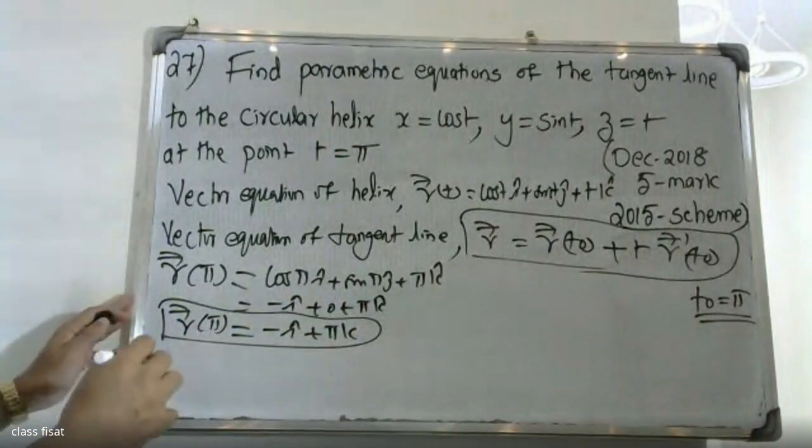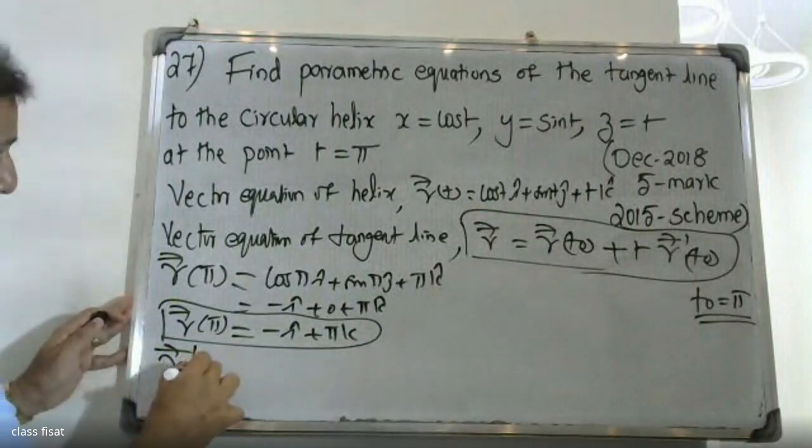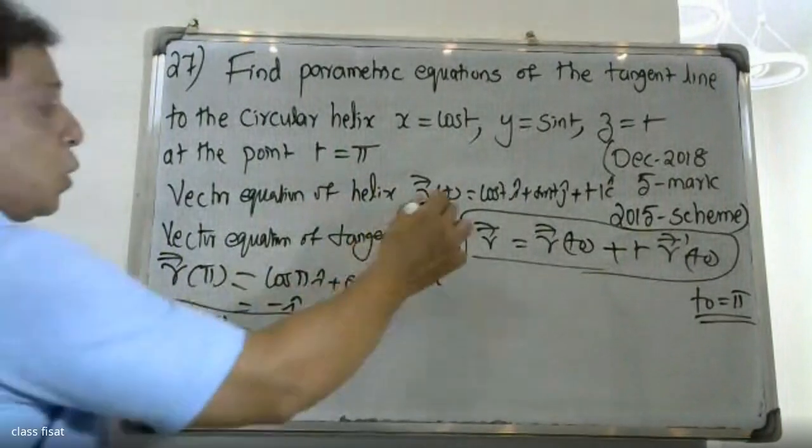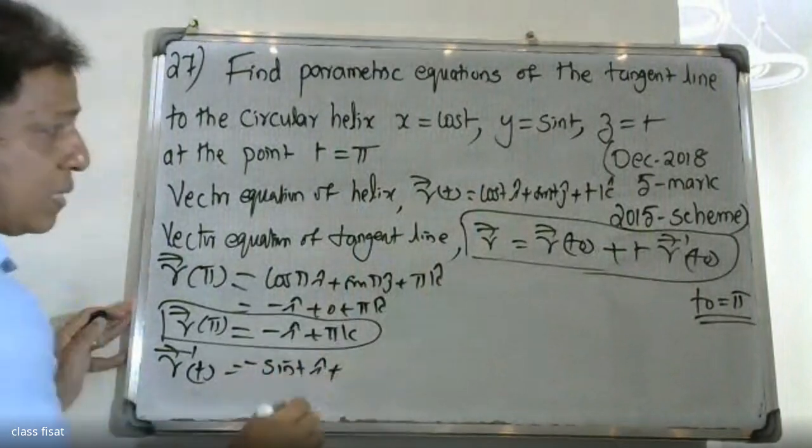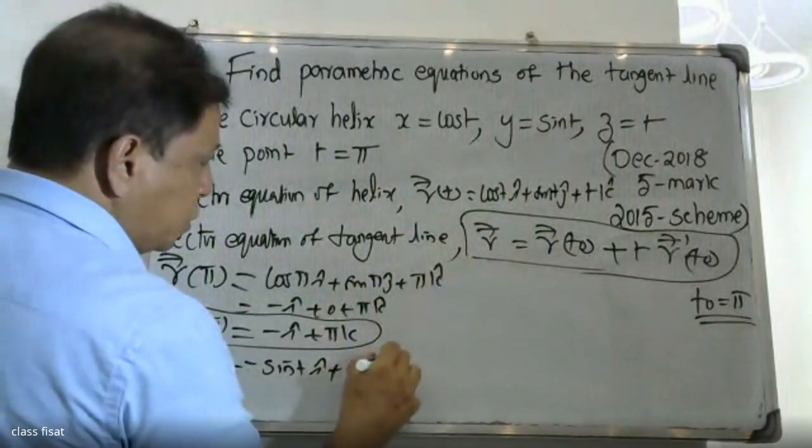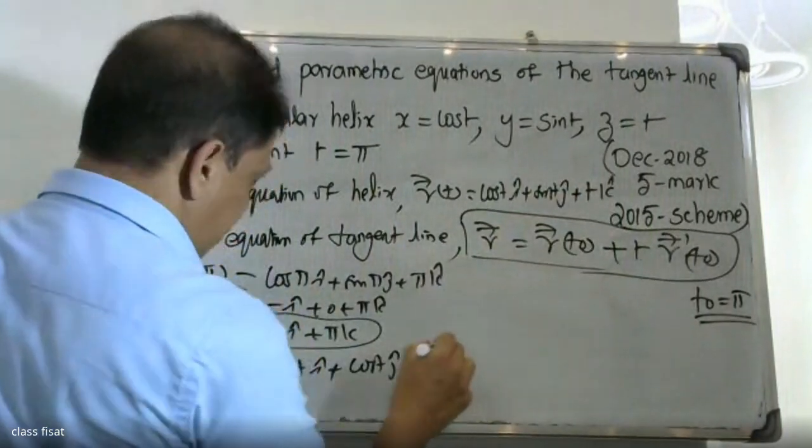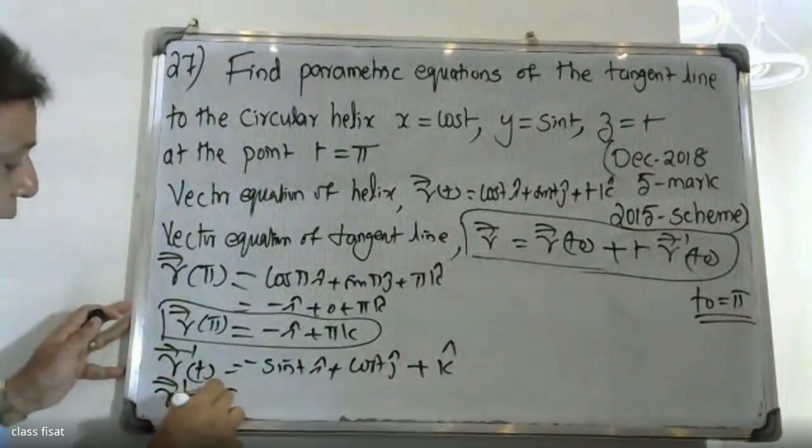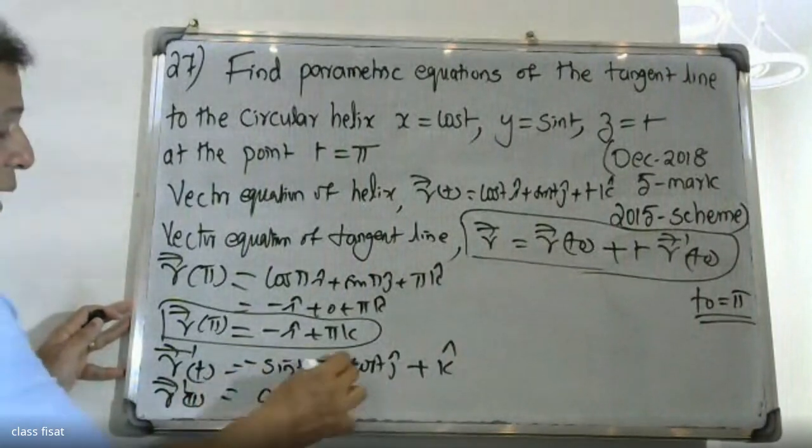You can differentiate the terms. We get R dash π. Differentiate cos t to get negative sin, differentiate sin t to get cos.